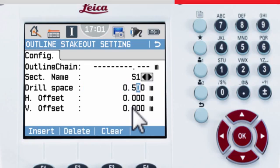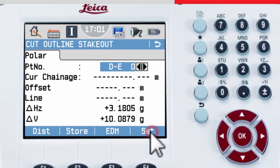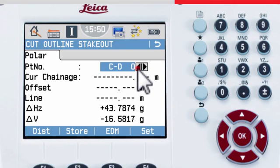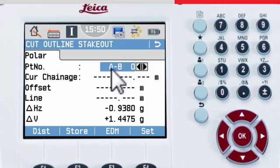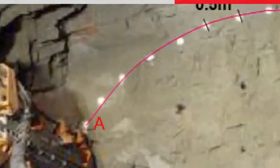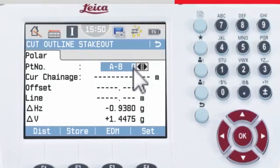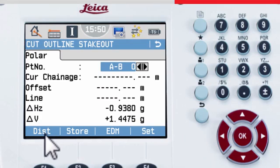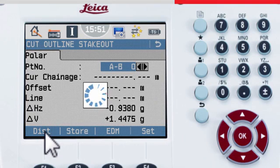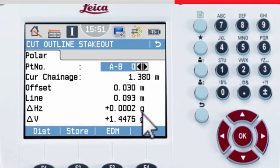If there are no offsets required, press set. In the point number field, choose which element of the profile to stake out. The letters indicate the start and end of the profile element, and the number is incremented according to the drill spacing. Take a distance to start the stake out. The horizontal and vertical differences are shown, and the point is staked out correctly when these reach 0.